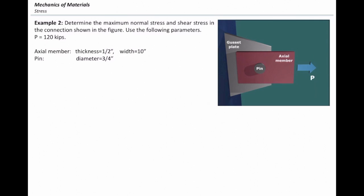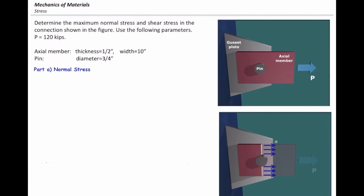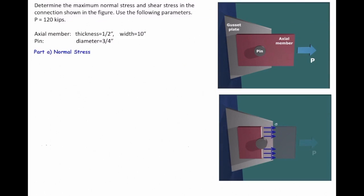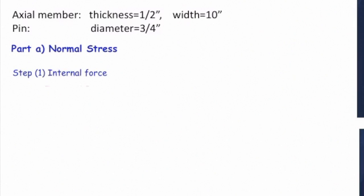In this problem, the axially loaded element has the width of 10 inch and the thickness of half inch. And the pin has a diameter of three quarter of inch. So we need to determine three kinds of stresses. First, let me determine normal stress. In the normal stress, we learned that this is a critical section. So let me determine area and force, then divide force by area. How much is internal force? P or F is 120 kips, equal to 120,000 pounds.